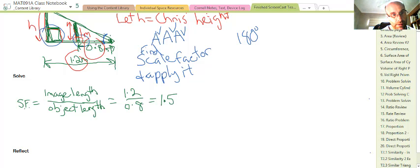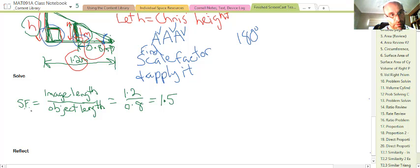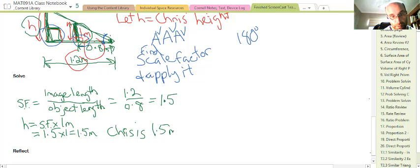To find h, we apply that same scale factor with the height. So we have the two corresponding vertical measurements, we've got h and 1. We know that Chris's height will be bigger than 1. So h is the scale factor 1.5 times 1 meter, because that's the length of the stick, 1 meter. So that's 1.5 times 1, which is 1.5. Chris is 1.5 meters tall.